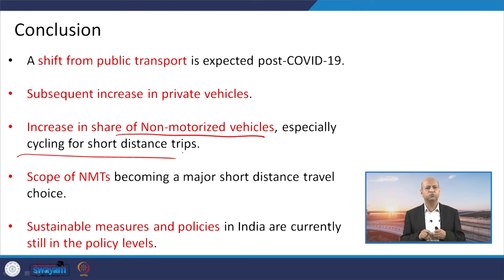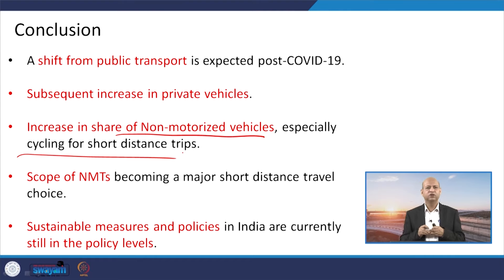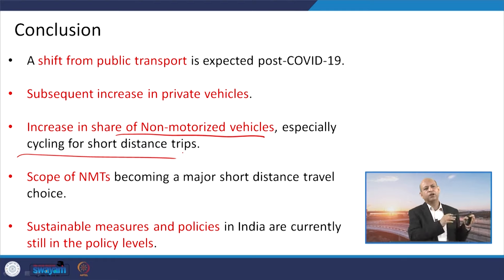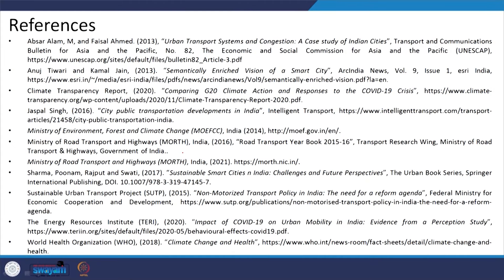Sustainable measures and policies for transportation require working out how much investment goes toward infrastructure and what is the disparity between public transport infrastructure and that for privately owned vehicles or NMTs. We need to invest more in separate lanes for NMTs as well as for public transportation systems, so that people shift from privately owned cars and two-wheelers to NMTs for shorter distances and to public transportation for larger distances. Thank you for your kind attention and see you in the next lecture.